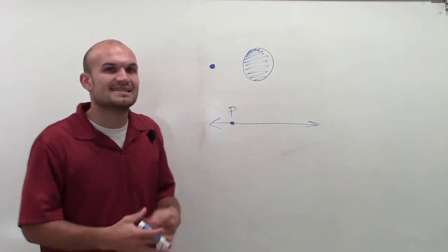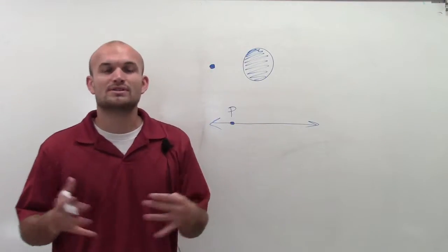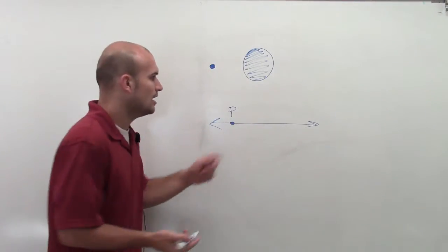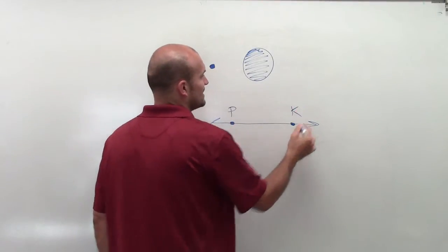But there's no difference in size of the point. Some points are larger and smaller. Points only represent location, where you could say, this point P is here, and this point K is over here.